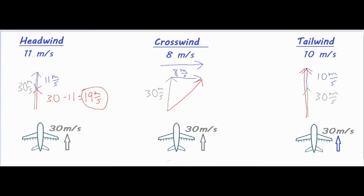The tailwind problem is even more simple — it just goes up all in the same direction, so it's just 30 plus 10, which equals 40 meters per second.